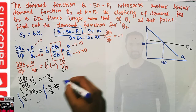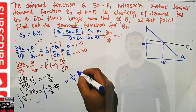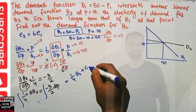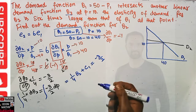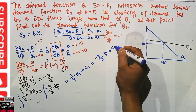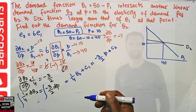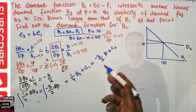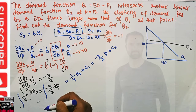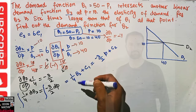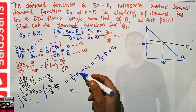Integrating both sides: the integral of dq2 gives us q2 plus a constant of integration c1, and this equals minus 3/2 times the integral of dp, which gives us p plus a constant of integration c2. When we evaluate an indefinite integral, we add the constant of integration — for more detail on this, you can check the playlist on rules of integration.